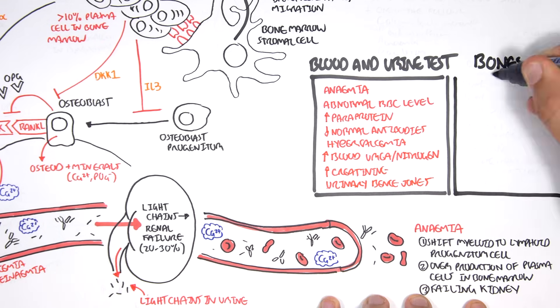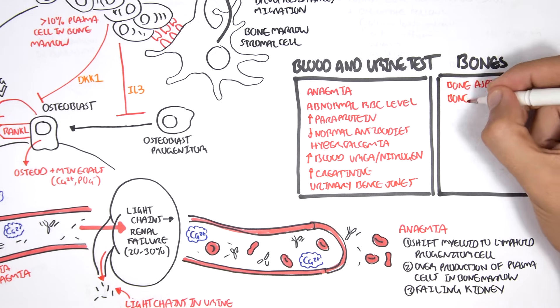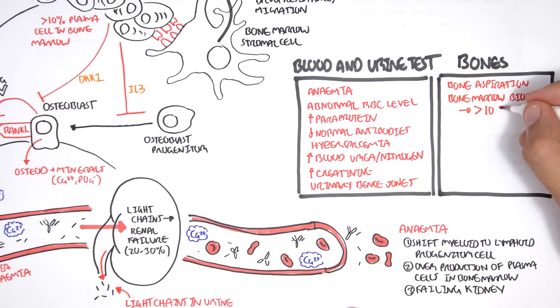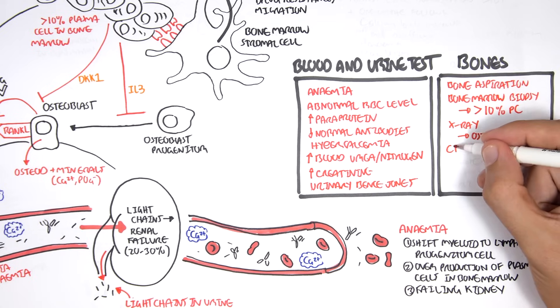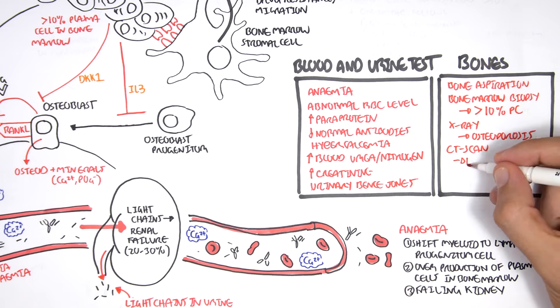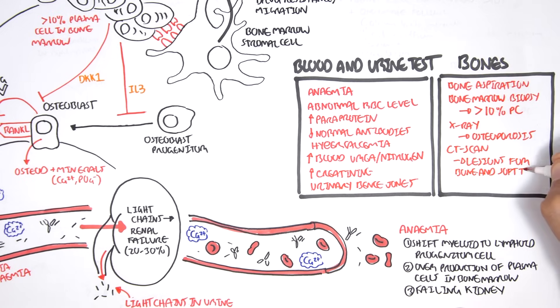Bone investigations include bone aspiration, bone marrow biopsy, which can show more than 10% plasma proteins in the bone marrow. X-rays can show osteoporosis and CT scans can show lesions of the bone and soft tissue. Those are the investigations we can perform in multiple myeloma.